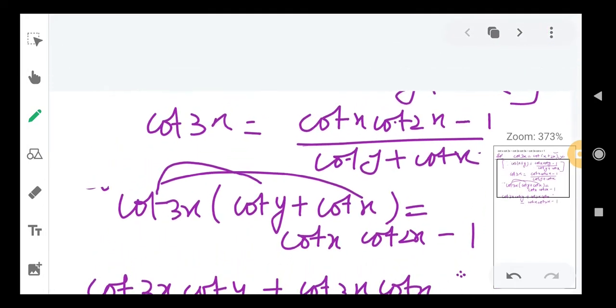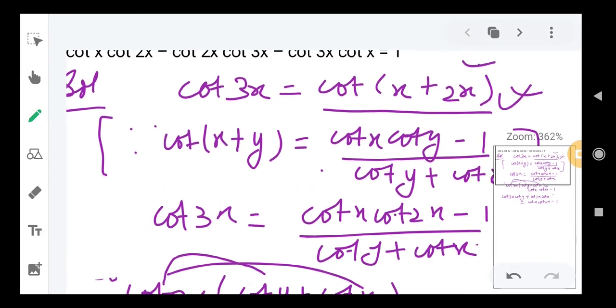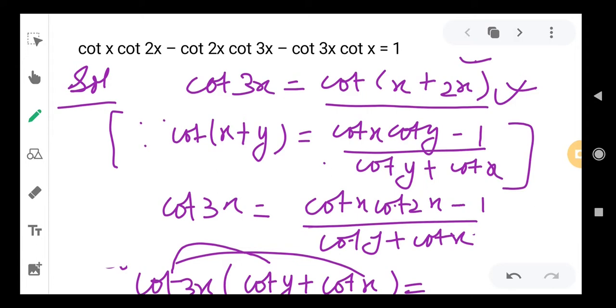So let's see what we need to prove. We need to prove cot x cot 2x - cot 2x cot 3x - cot 3x cot x equals 1. So 1 should be on the right side, which means we need to isolate 1.